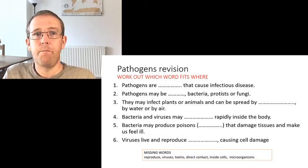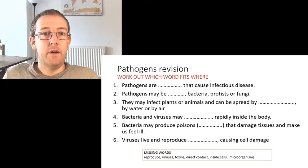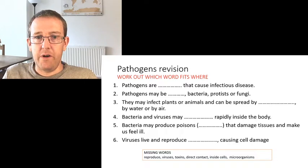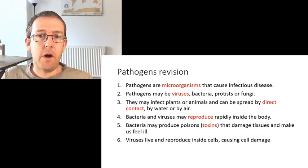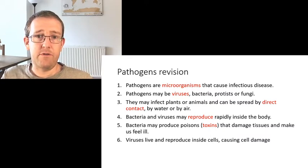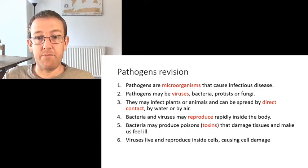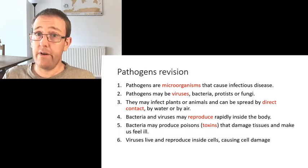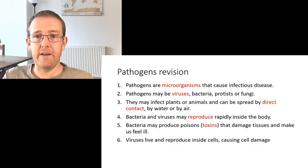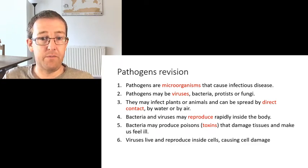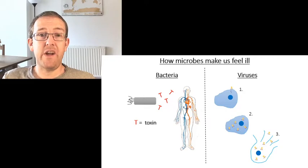That should be nice and straightforward - let's go through the answers. Pathogens are microorganisms that cause infectious disease. Those pathogens might be viruses, bacteria, protists, or fungi. They may infect plants or animals and can be spread by direct contact, by water, or by air. Bacteria and viruses reproduce rapidly inside the body, and bacteria may produce poisons or toxins that damage tissues and make us feel ill. Viruses live and reproduce inside cells, causing cell damage.